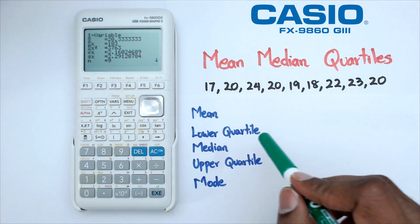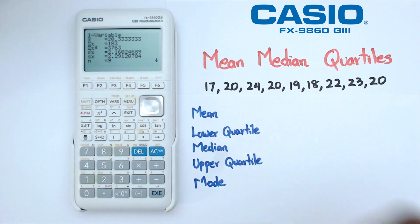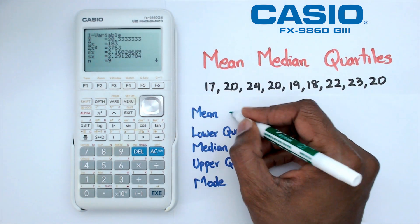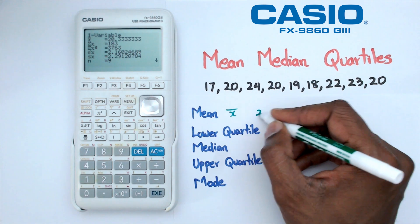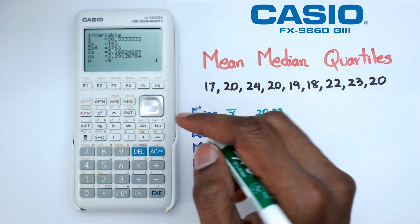We've got our mean, which is 20.33. That's the first one, which is the X bar, so this is equal to 20.33 recurring.